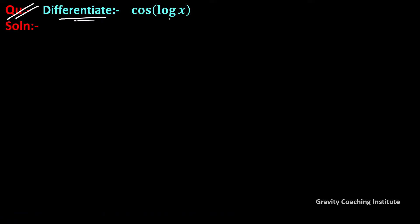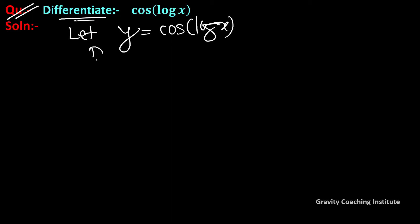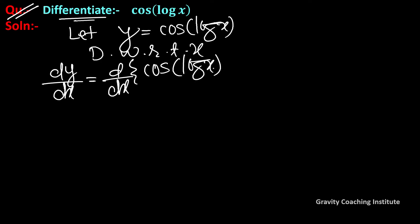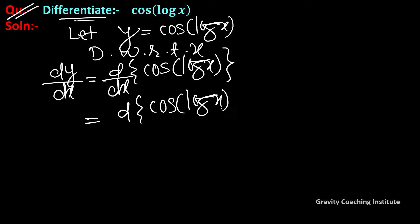Differentiate cos(log x). First, let y equal to cos(log x). Now differentiate with respect to x, so dy/dx equals the derivative of cos(log x). Applying the chain rule, we get the derivative of cos(log x).